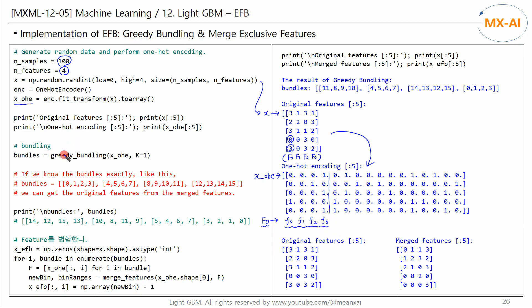Next, perform the greedy bundling algorithm on the encoded X. Set the max conflict count to 1. 0 is also fine. The result is like this.